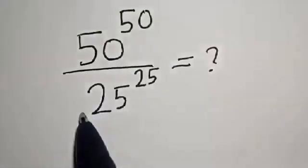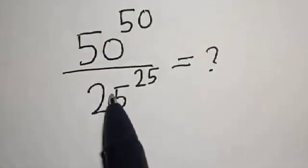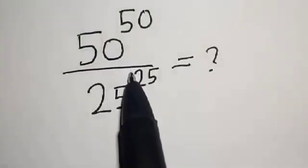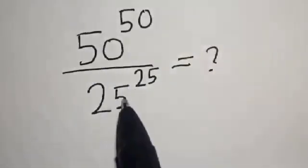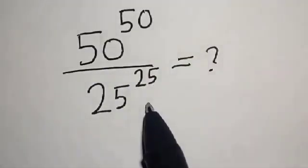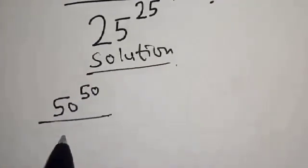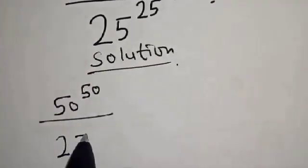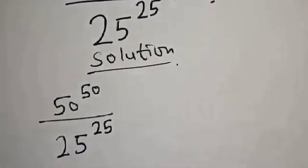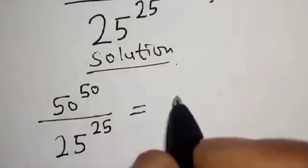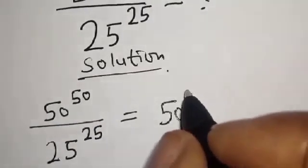50 raised to power 50 divided by 25 raised to power 25 is equal to what. We want to look at how we can quickly solve this power division problem: 50 raised to power 50 over 25 raised to power 25.